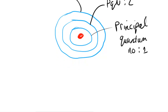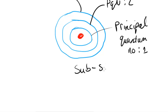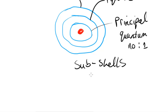Inside these shells — because all these shells really represent is a specific level of energy — they also represent a region where there's a higher probability that electrons are somewhere close to these lines. Now within these shells there are subshells, and within the subshells there are orbitals.